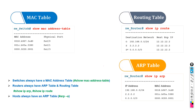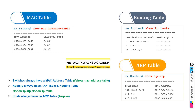So these are the three types of tables: MAC address table, routing table, and ARP table. Switches always have a MAC address table. Routers always have both an ARP table and a routing table — two tables. And hosts like computers, security cameras, printers, and servers always have an ARP table. If you have any questions, you can write them in the comments below.